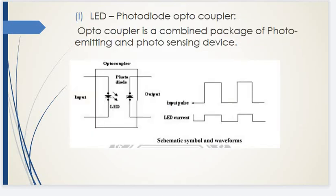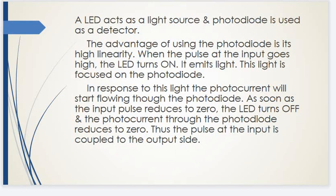LED Photodiode Optocoupler: The optocoupler is a combined package of a photo-emitting and photo-sensing device. The input is an LED and the output is a photodetector or photodiode. The LED acts as a light source and the photodiode is used as a detector. The advantage of using a photodiode is its high linearity. When the input pulse goes high, the LED turns on and emits light focused on the photodiode, causing photocurrent to flow. As soon as the input pulse reduces to zero, the LED turns off and photocurrent reduces to zero, coupling the pulse to the output side.